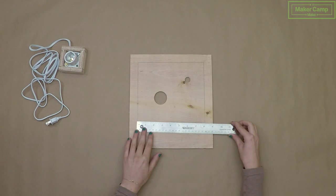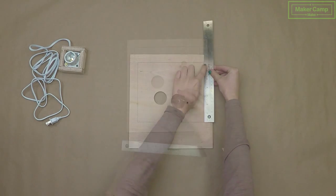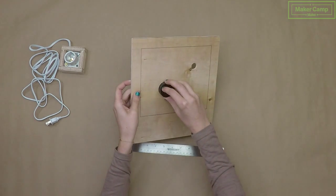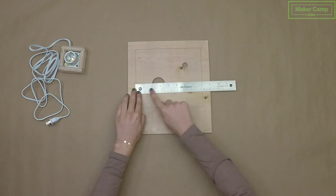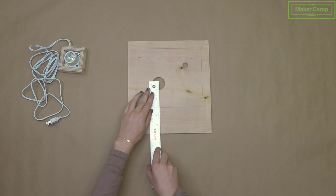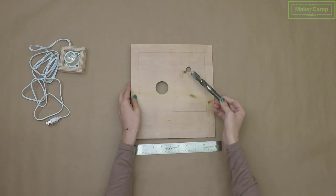Use the one and a half inch hole saw bit to make your hole for your lamp base. We made ours two and three quarters up and to the right of the bottom left corner of the rectangle. Use the five eighths inch drill bit to make a hole for your motor.